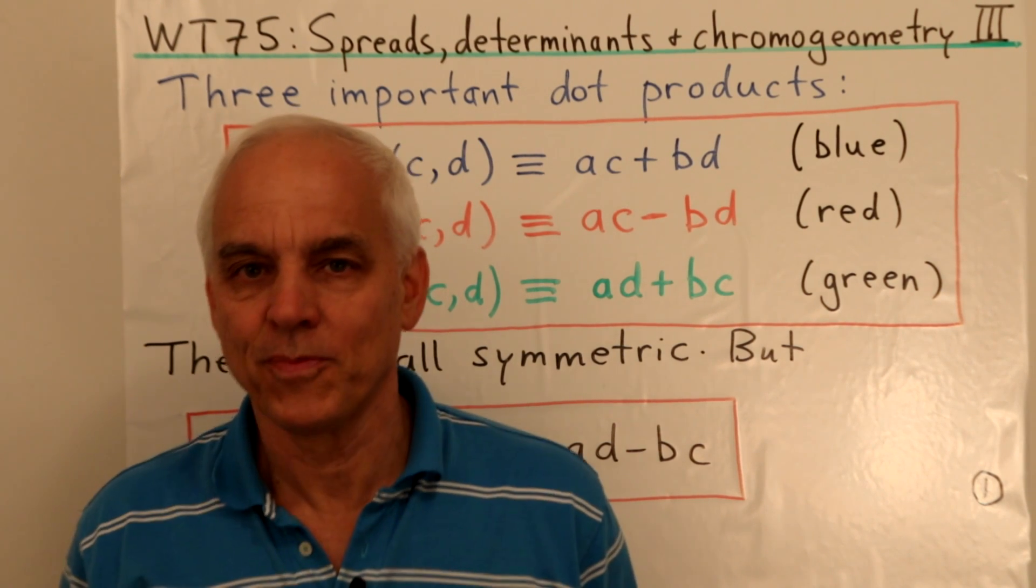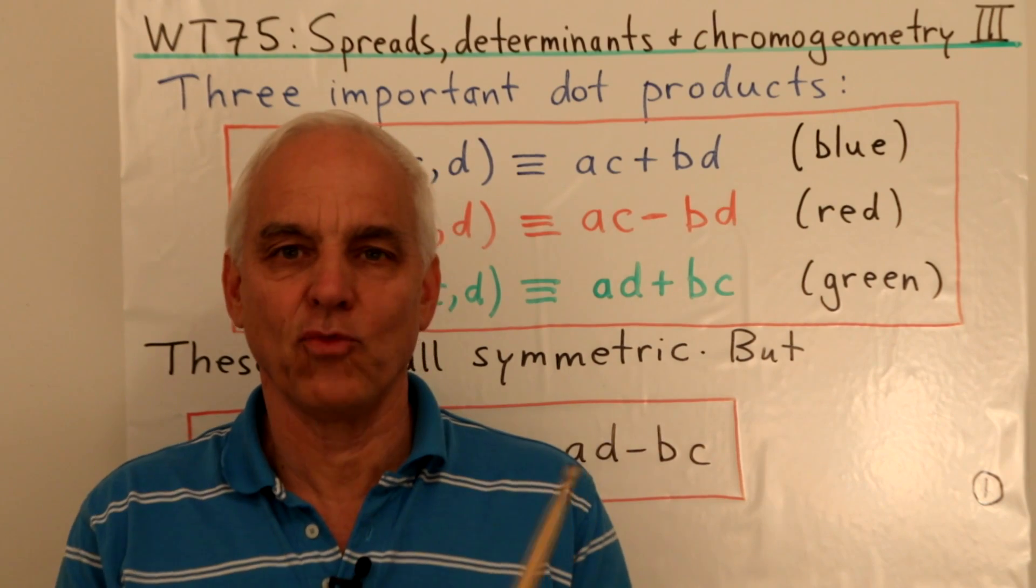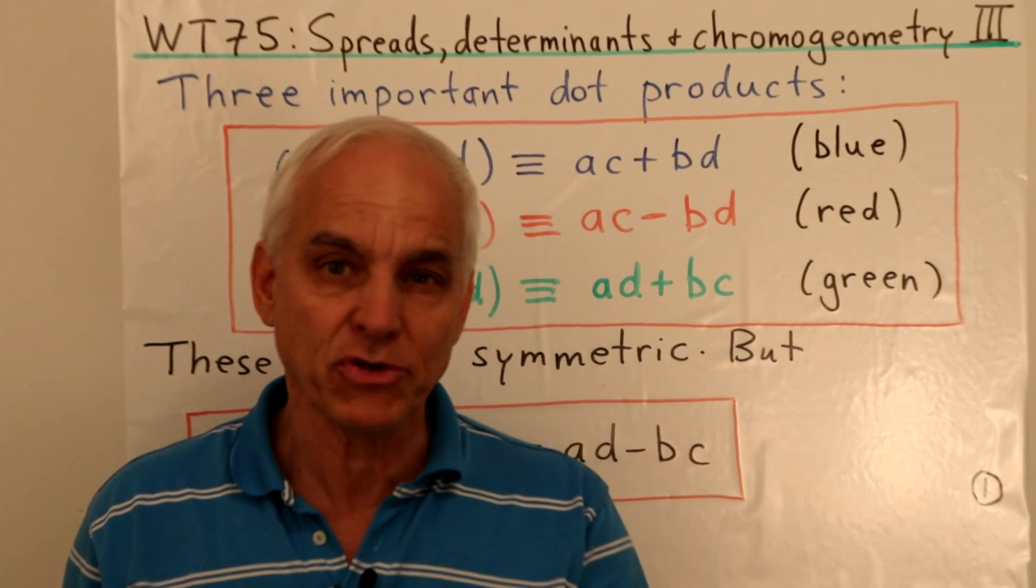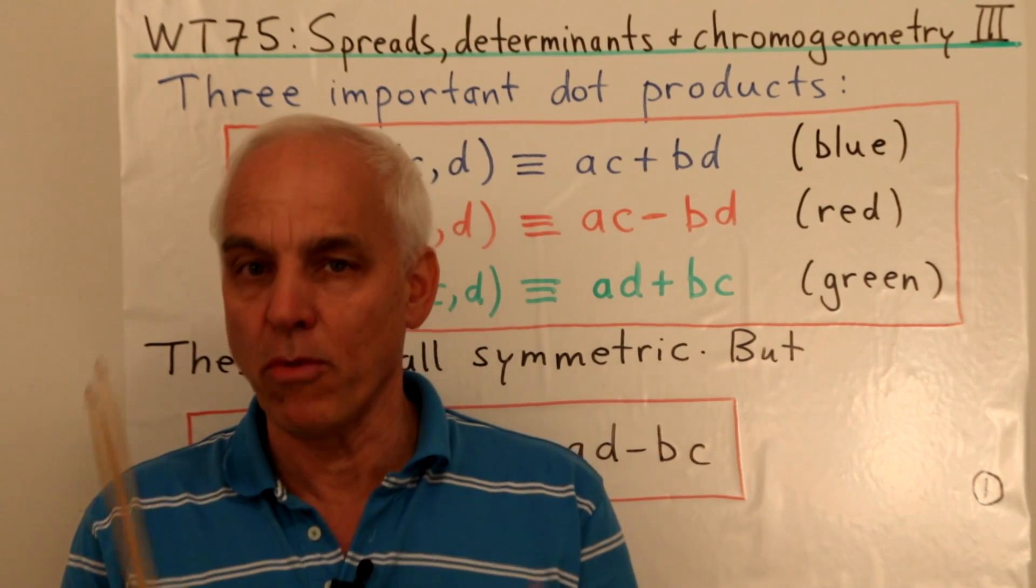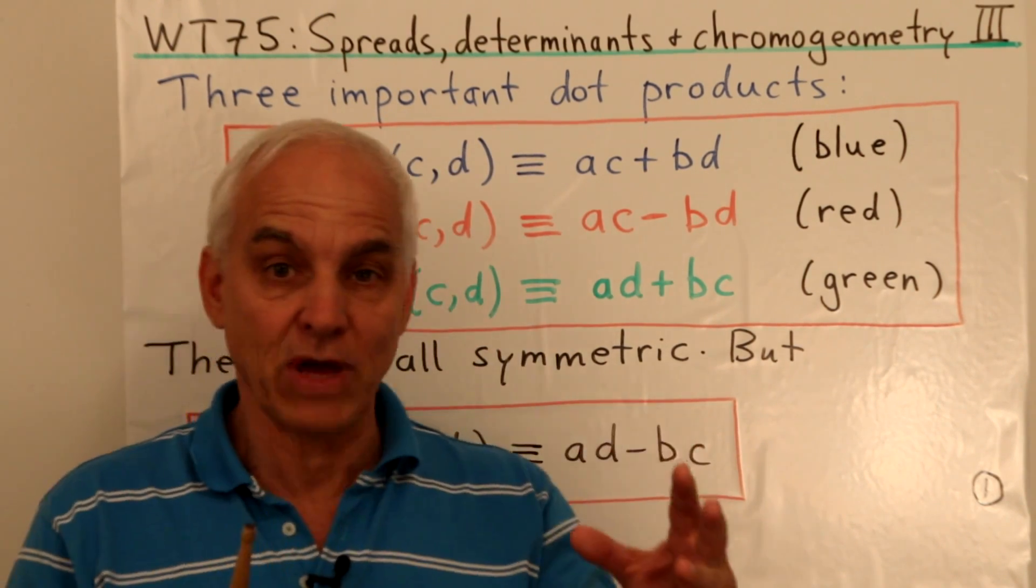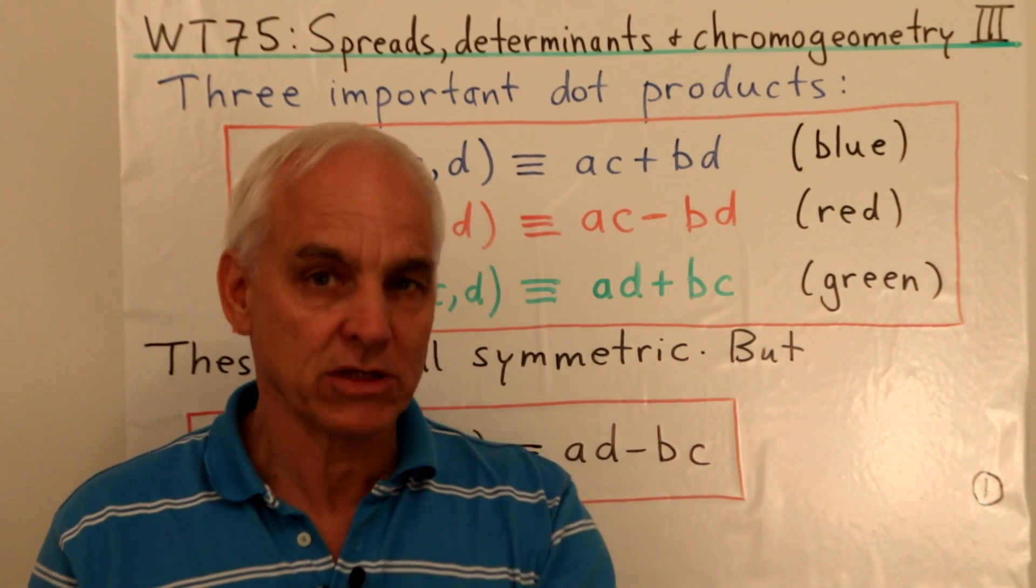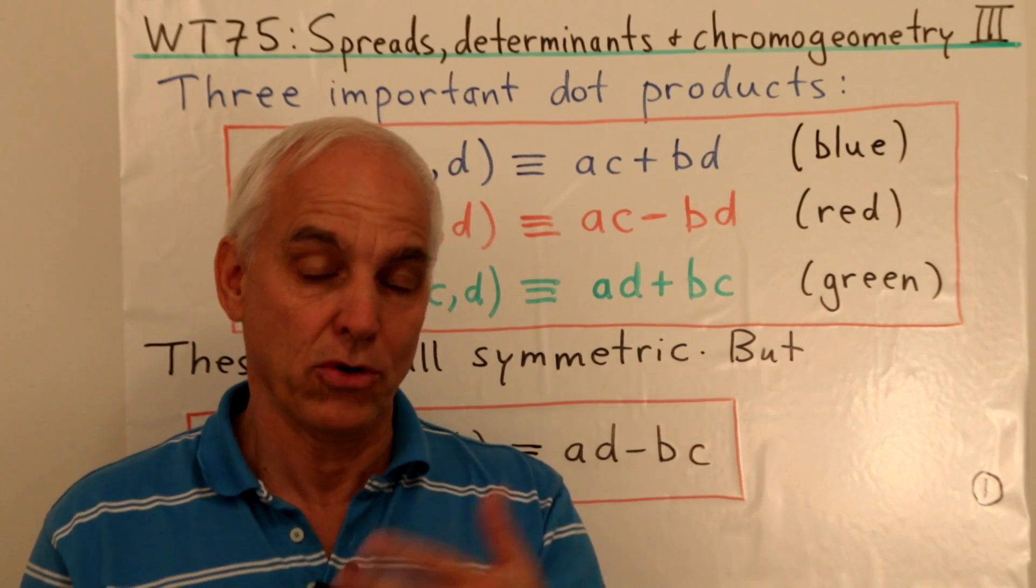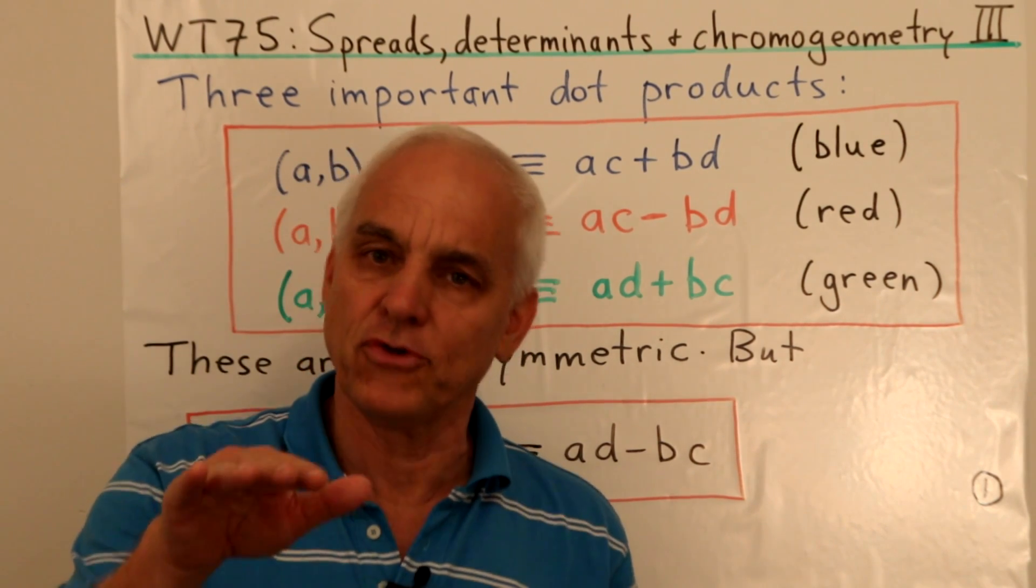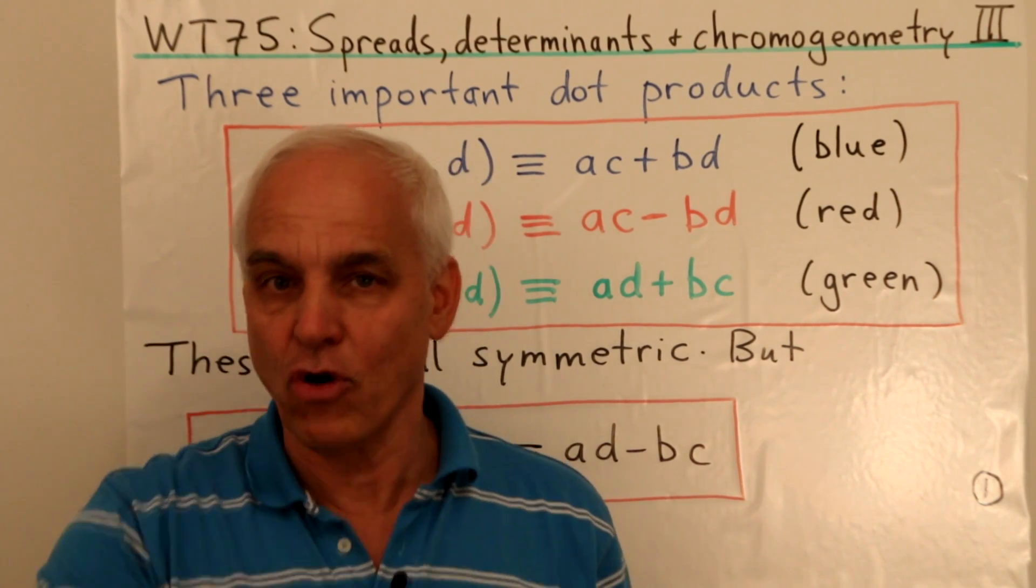Good day, I'm Norman Weilberger. In this video we're going to start looking more carefully at this wonderful threefold symmetry in planar geometry encoded by chromo geometry, where we have three different metrical structures that are all related and interacting. We've talked about this earlier in this series. This is a reminder, and we're going a bit further towards a vector appreciation of chromo geometry.